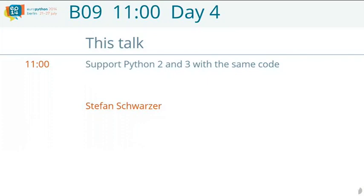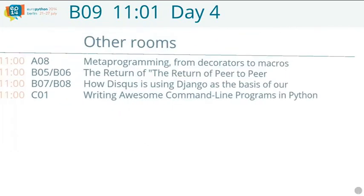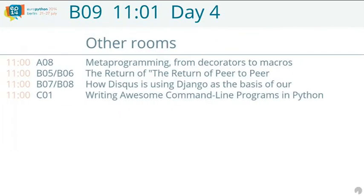Stefan Schwarzer is a Pythonist for 15 years. He has written articles and a book on Python, and he's a regular speaker at Linux and Python conferences. He also maintains the FTPutil library, which is quite handy.